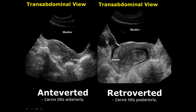The anteverted position is the most common uterine position, in which the cervix faces or tilts anteriorly. There is no bending of the body of the uterus, so we do not comment on it — we just talk about the cervix. On the right side is the retroverted uterus.